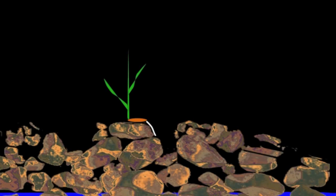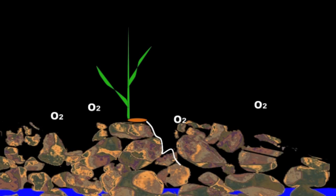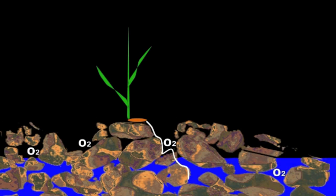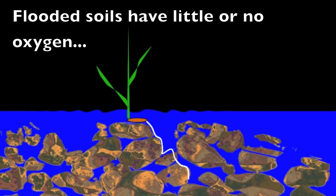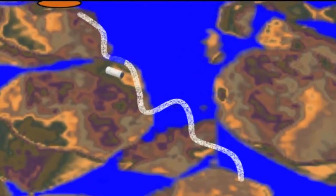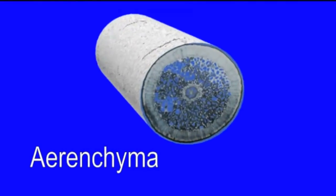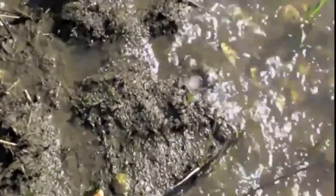Wetland plants must tolerate periodic flooding. When a plant establishes in a well-drained soil, the pore spaces between soil particles are filled with oxygen. Upon flooding, however, soil pores become filled with water, and respiration of microorganisms uses up oxygen faster than it can be replaced. Thus, flooded soils have little or no oxygen. Plants tolerate such low oxygen conditions by developing special airspace tissue inside the roots called arenchyma, which creates an internal aeration pathway that allows oxygen in the atmosphere to reach the roots. This is one mechanism that allows plants to survive flooding.